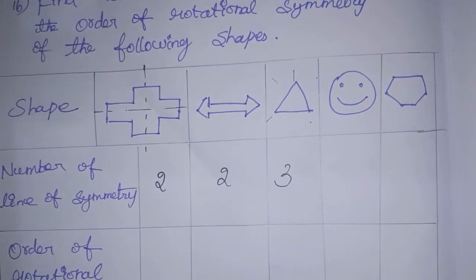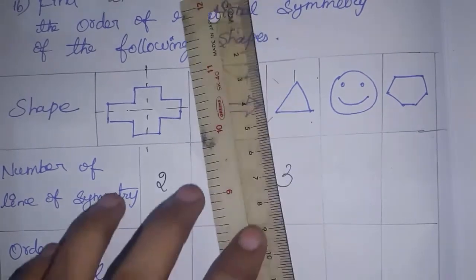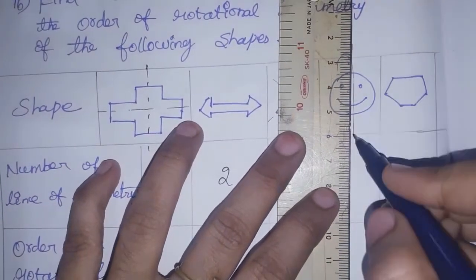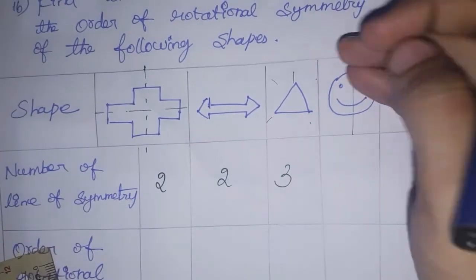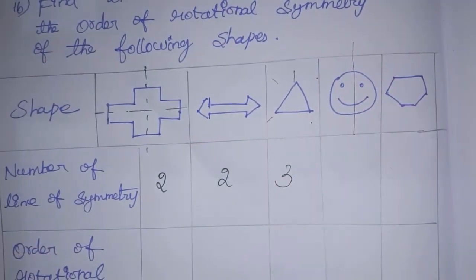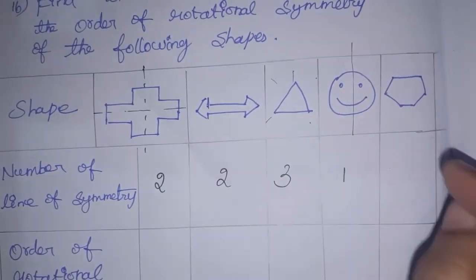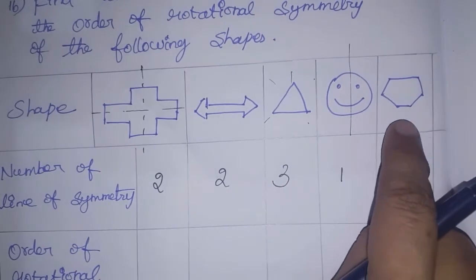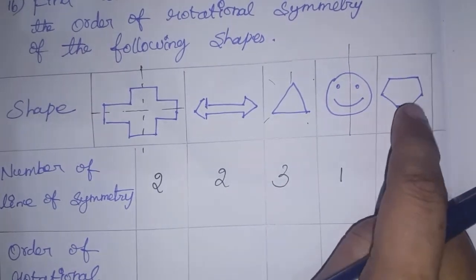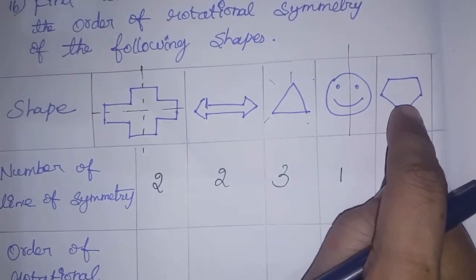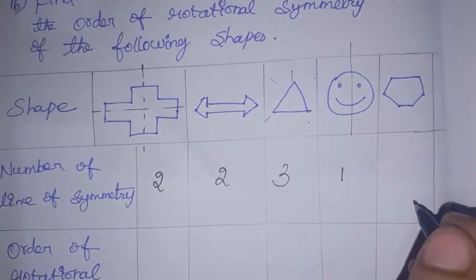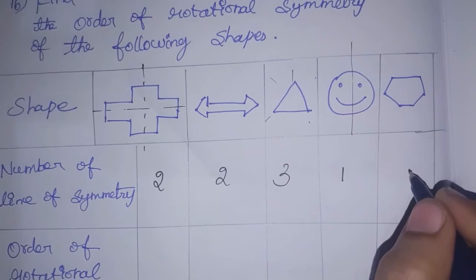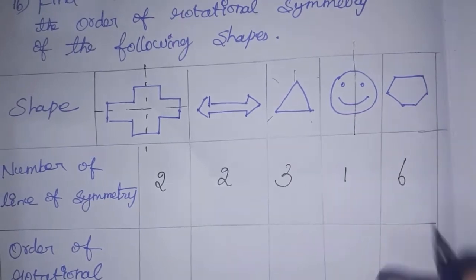Next, when you draw the smiley, you can draw the eyes and the mouth, so you can draw one line of symmetry. Next, the diagram has six sides — it is a hexagon. A hexagon has all sides equal and all angles equal, so we can draw six lines of symmetry for the hexagon.